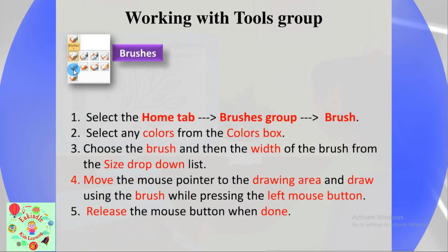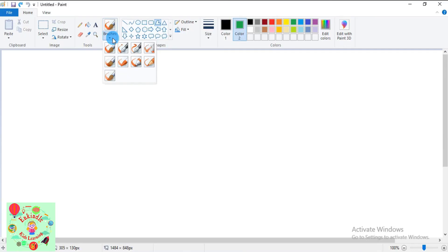The next tool is Brushes. To select different types and styles of brushes, click on the Home tab. Under the Brushes group you can select any brush available. Select a color from the colors box, choose the brush, and set the width from the Size drop-down list. Then move the mouse pointer to the drawing area and draw by pressing the left mouse button.